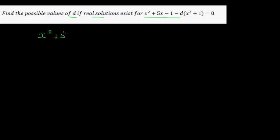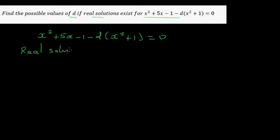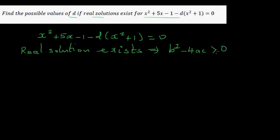Find the possible values of d if a real solution exists for this quadratic equation. Real solution exists means the determinant b squared minus 4ac is greater than or equal to 0.